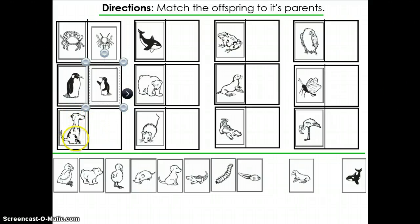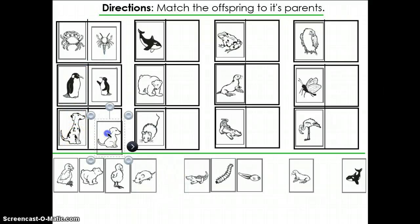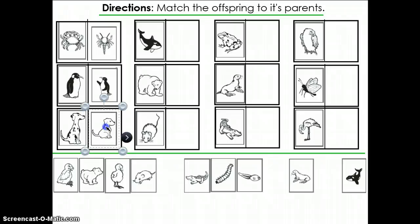Here we have a dog, an adult dog, and here the puppy looks a little different. We don't have the spots, but we can see the tail, we can see the ears, we can see the two legs, we can see how it's sitting.